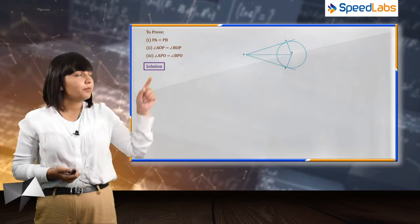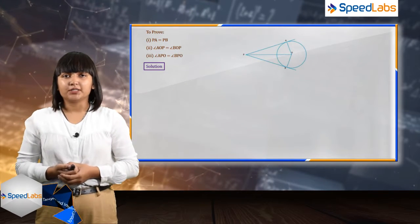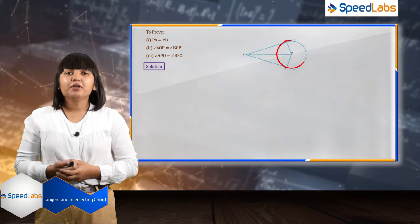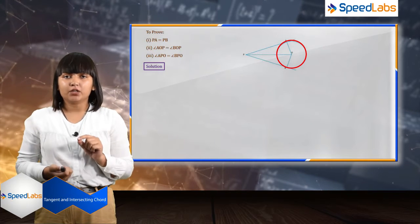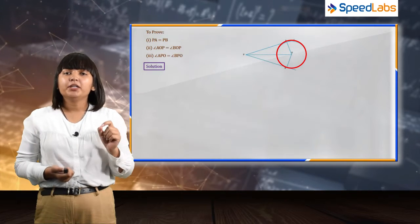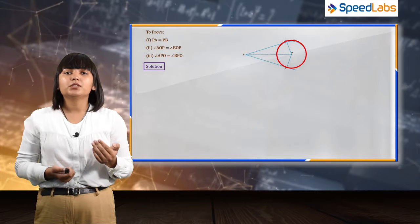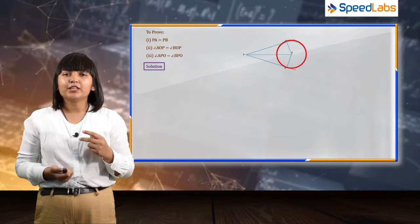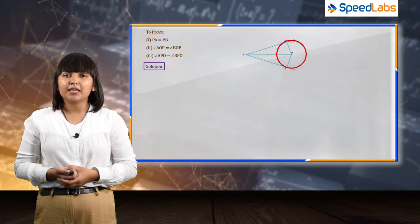In the given question, we are supposed to prove the following three points. In this question we are given a circle with centre O. There is a point P which is external to the circle and there are two tangents drawn from that point, that is PA and PB.